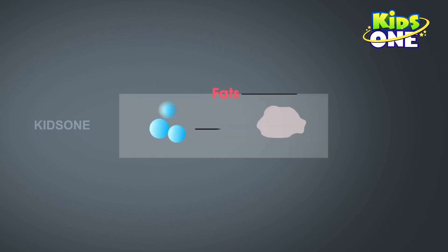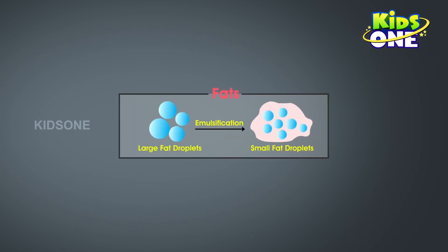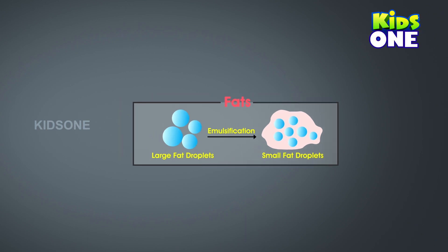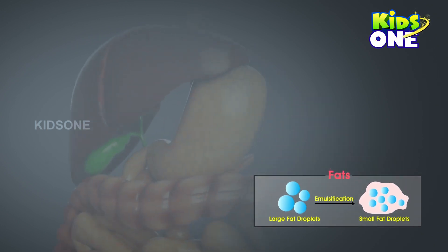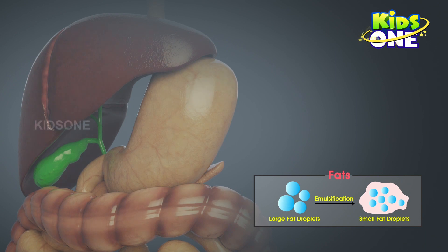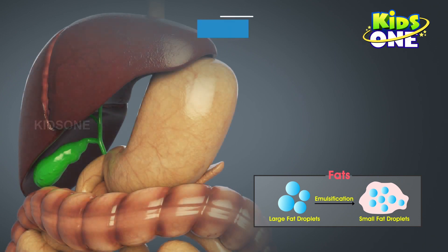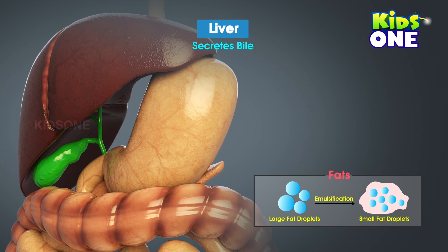Fats are emulsified instead. Emulsification refers to the process of breaking down larger fat components into smaller droplets. This is taken care of by the next gland — the largest gland in the human body. It is the liver. The liver secretes an important substance called bile.